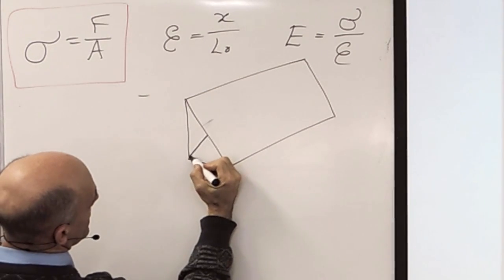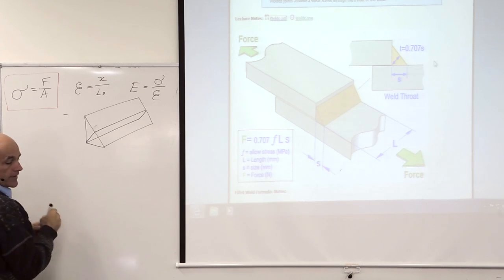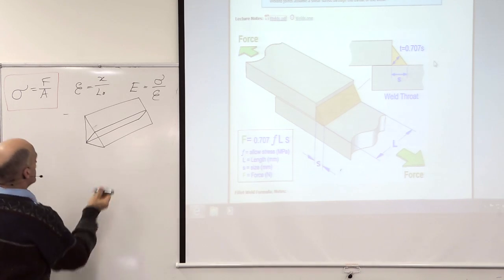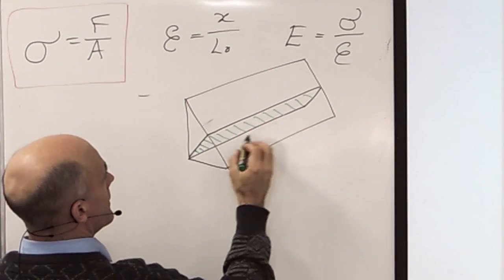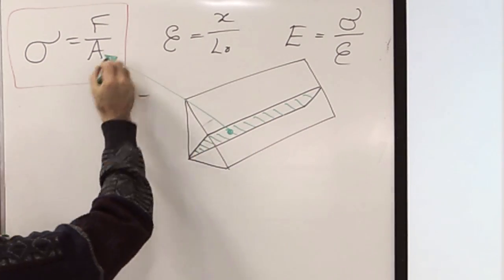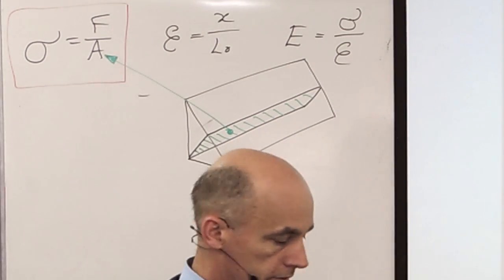The weld looks like that. The cross section goes through here. So if I can work out the area through here, that's area. Once I get the area, I can do stress equals force over area.